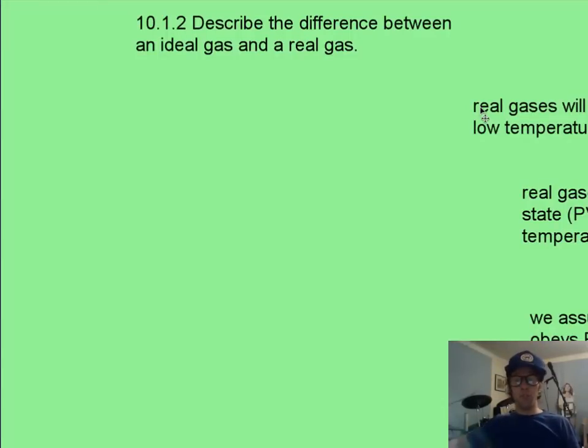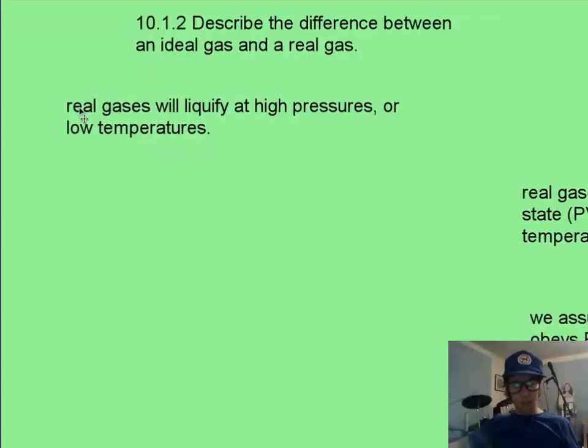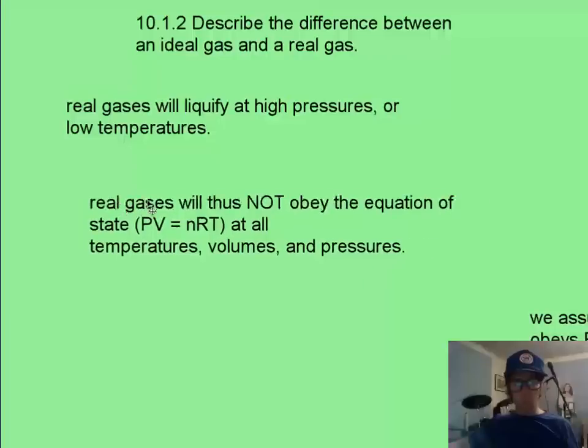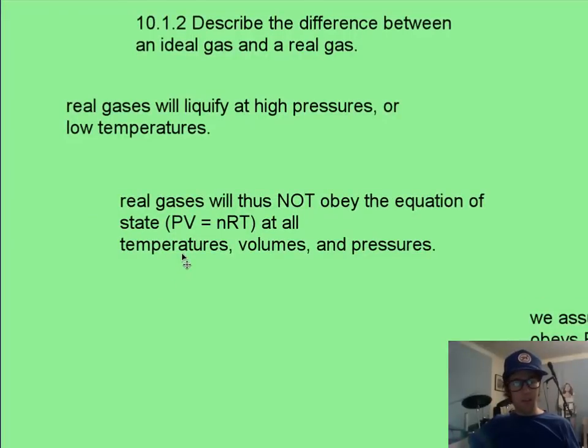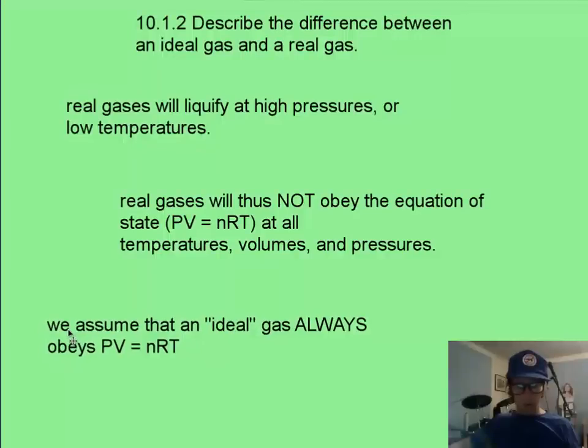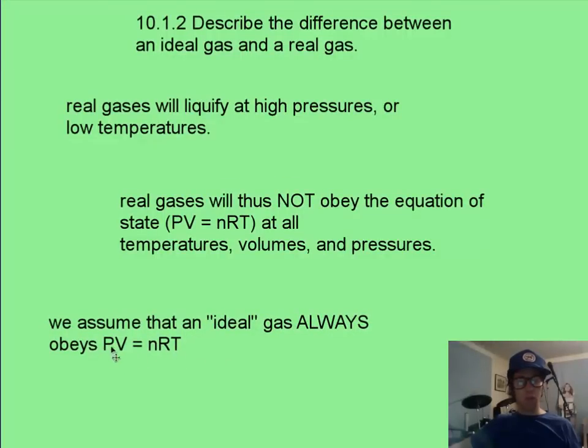And so, real gases will actually liquefy at high pressures, or low temperatures. And this will no longer obey PV=nRT. And so, they will not obey PV equals nRT at all these temperatures, crazy volumes and pressures, usually low temperatures, and high pressures is where things break down. And so, for an ideal gas, we do assume that we'll always obey PV=nRT, but real gases in real life will not.